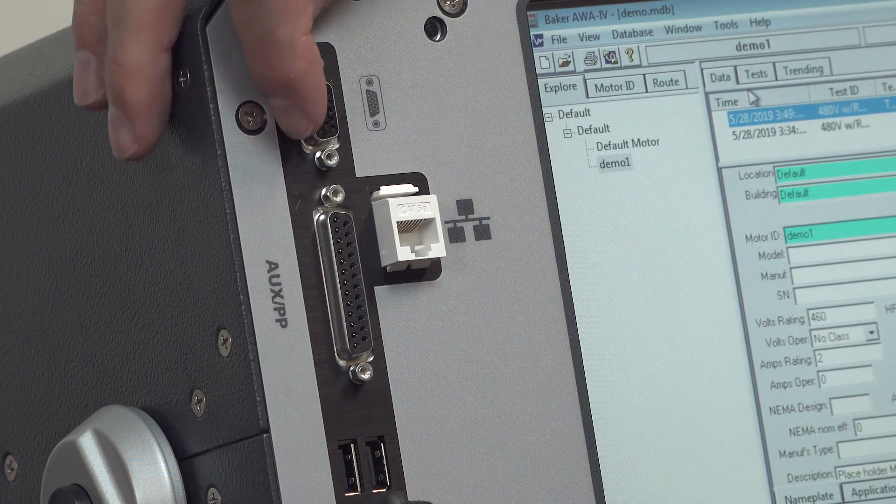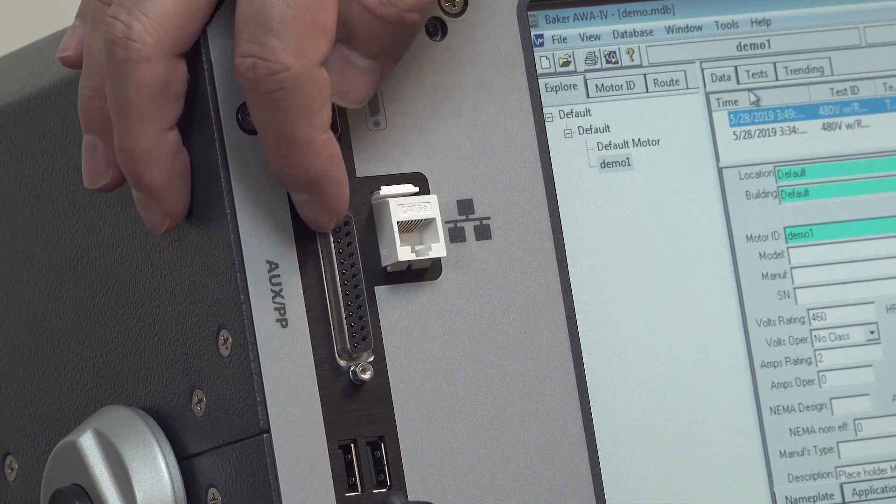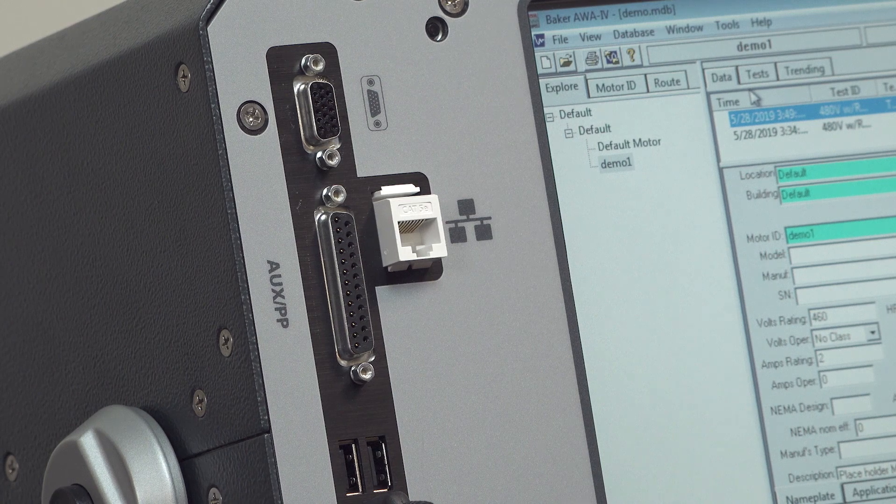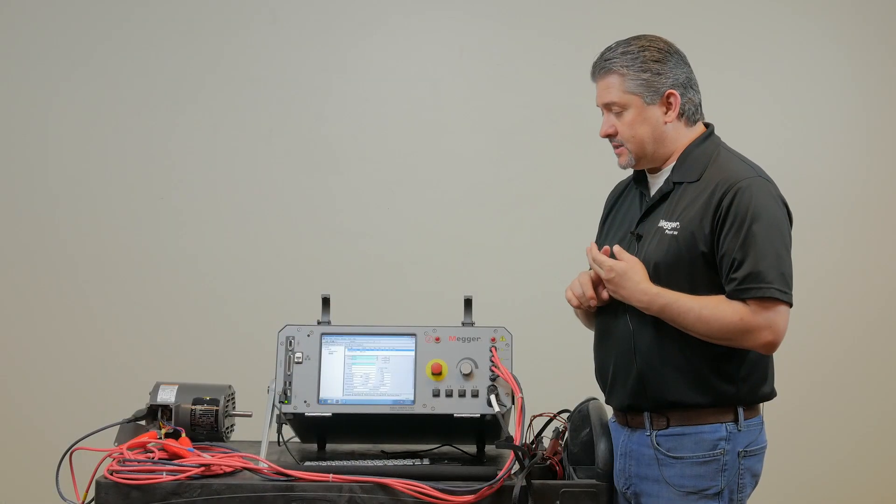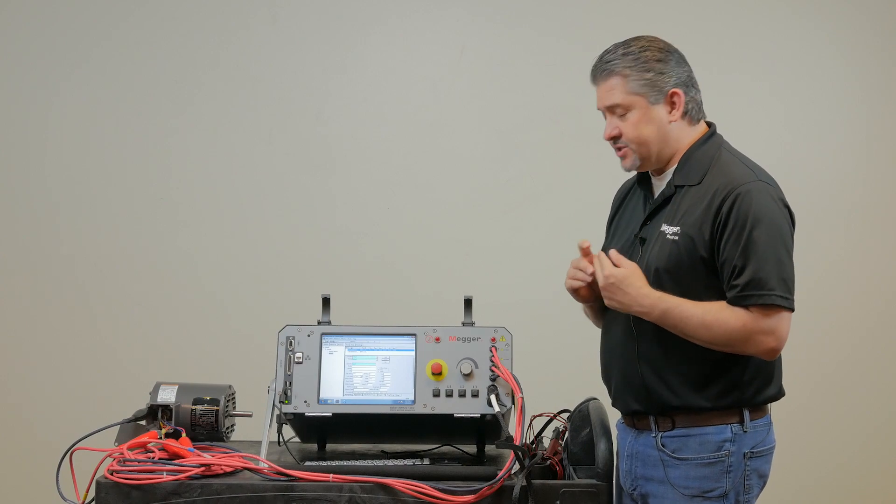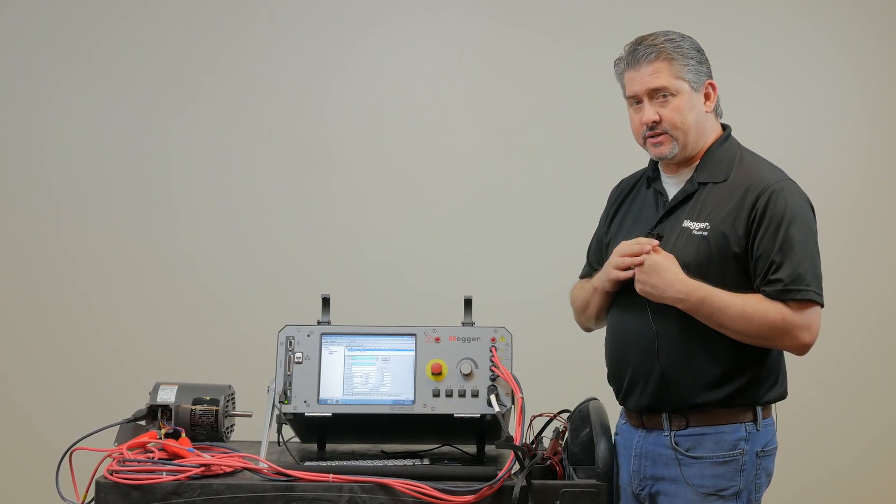The next connector is the AUX power pack connector. This is a 25-pin connector that is used to interface with a power pack or an impedance transformer, the ZTX transformer, which is used for armature testing and low impedance testing.